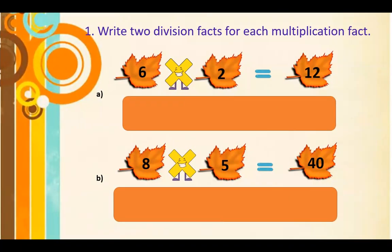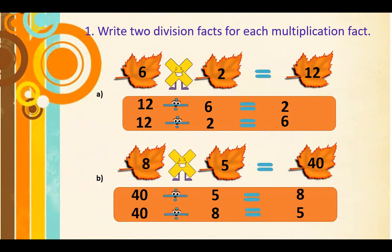Now write two division facts for each multiplication fact. The first multiplication fact is 6 times 2 is 12, so the division facts are 12 divided by 6 is equal to 2, and 12 divided by 2 is equal to 6. The second question is 8 times 5 is equal to 40, so the division facts are 40 divided by 5 is equal to 8, and 40 divided by 8 is equal to 5.